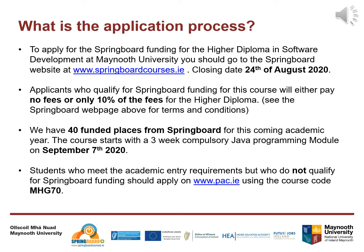Regarding the application process: to apply for the Springboard funding for the Higher Diploma in Software Development at Maynooth University, go to springboardcourses.ie. The closing date for application is the 24th of August 2020. Make sure you read the terms and conditions on the website. Applicants who qualify for Springboard funding will either pay no fees or only 10% of the fees for the Higher Diploma. We have 40 funded places from Springboard for this coming academic year.